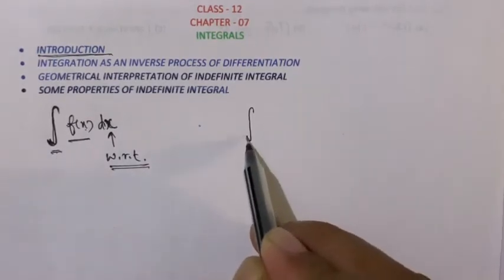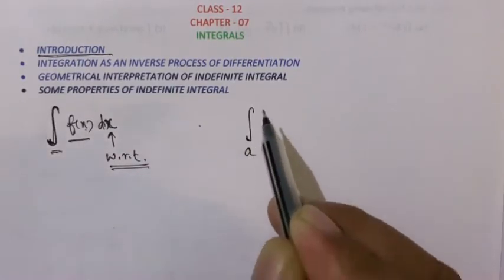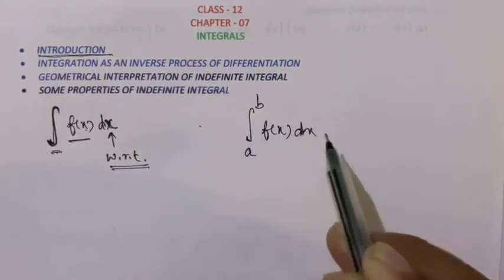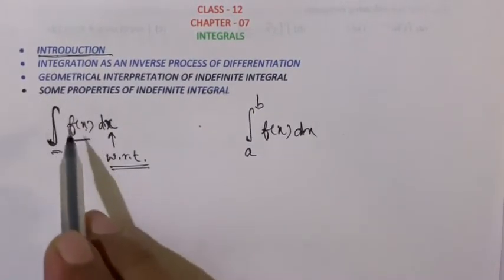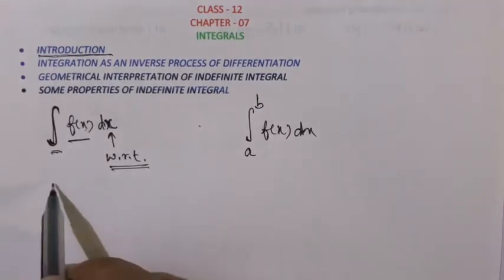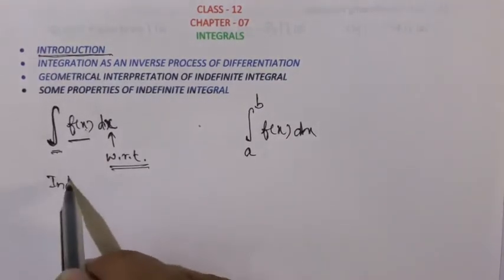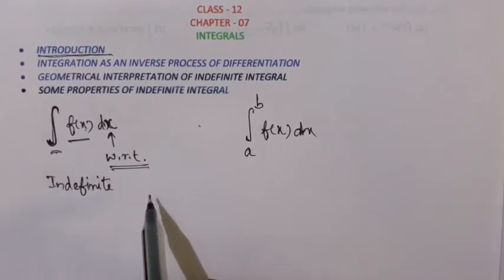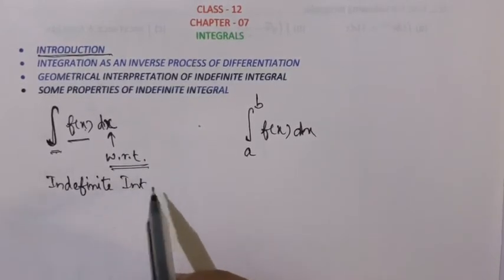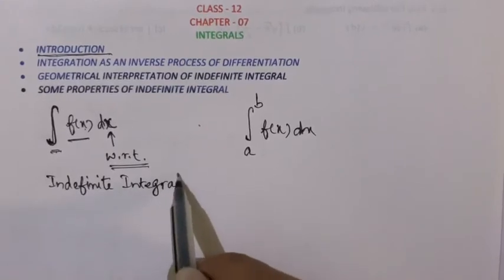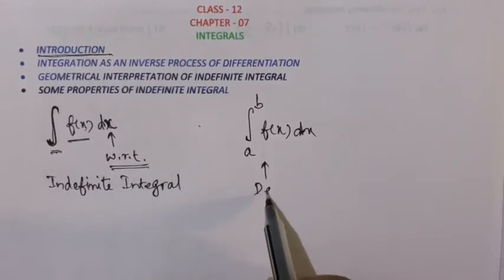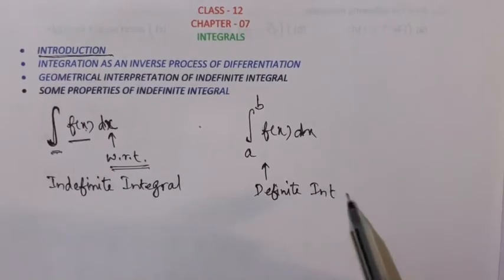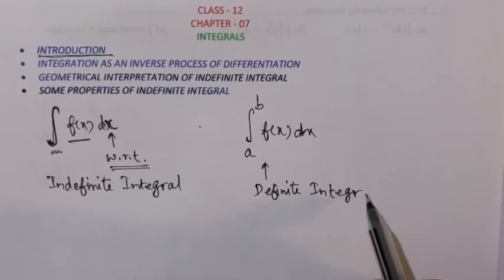One type has no limits written, which we call the indefinite integral. The other type has limits written, which we call the definite integral. There is a big difference between the two.